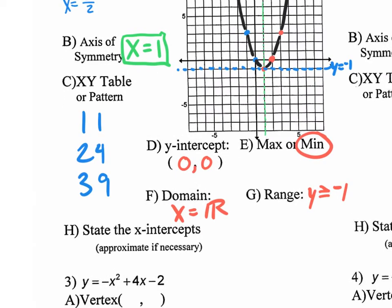Last, state the x-intercepts — approximate if necessary. The x-intercepts are where it crosses the x-axis. This parabola crosses at two locations. We need to state the x values: 0 and 2. So the answers are x equals 0 and x equals 2. You could give them as coordinates if you want, but all I really want are the x values.